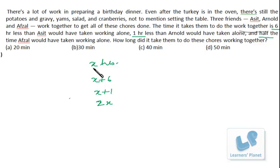So x hours is when all of them are working together. These are their individual capacities if each guy is working all alone. Now, according to time and work, we have to calculate the unit work. So in one hour, this guy will be doing 1/(x+6) work,